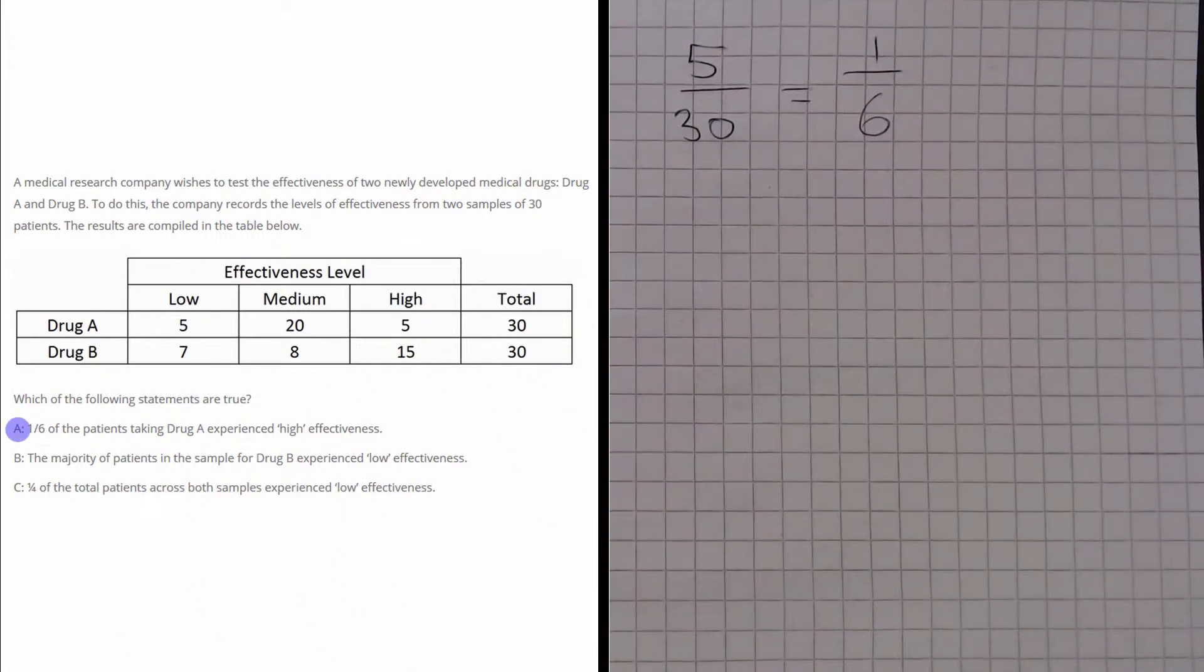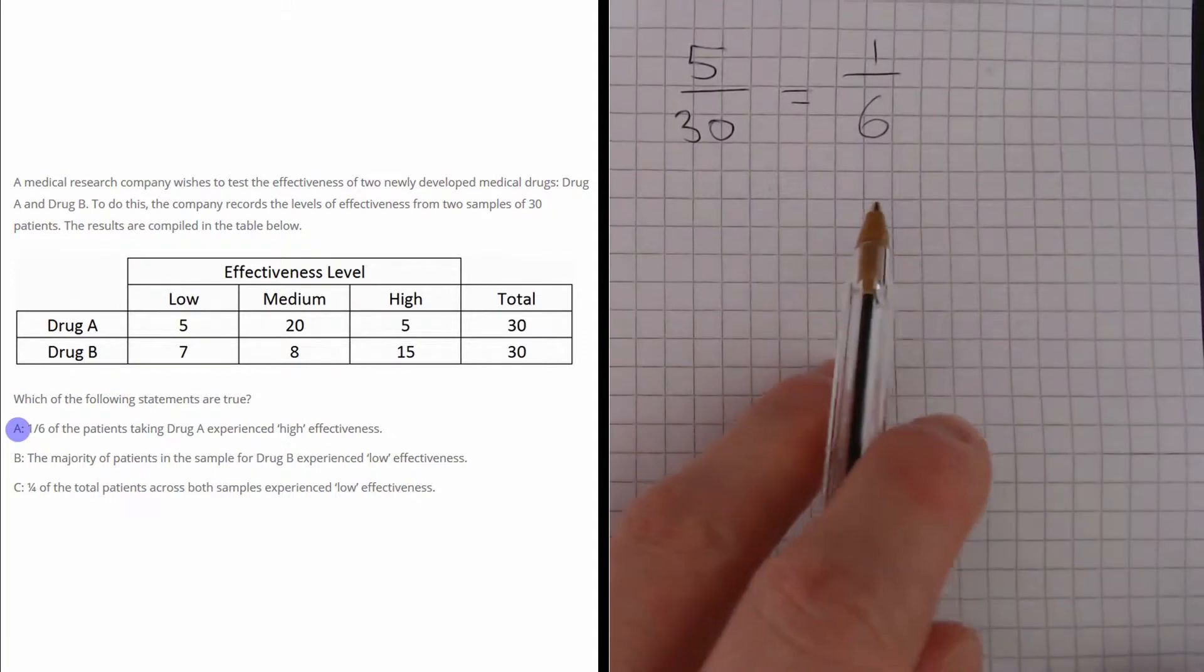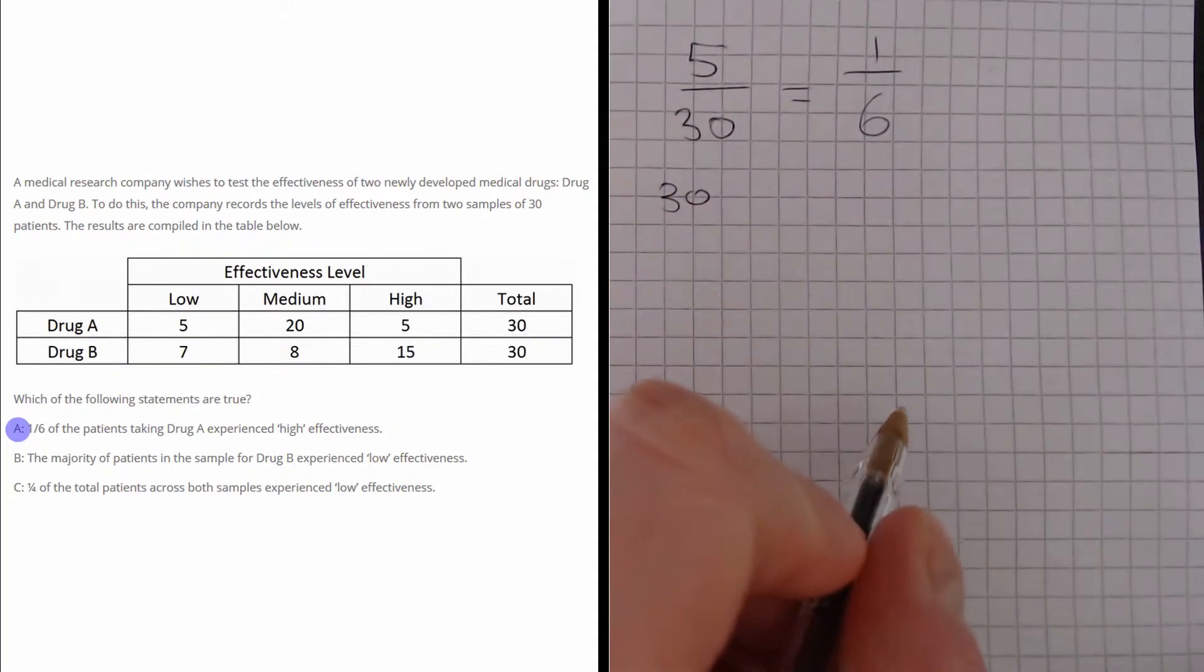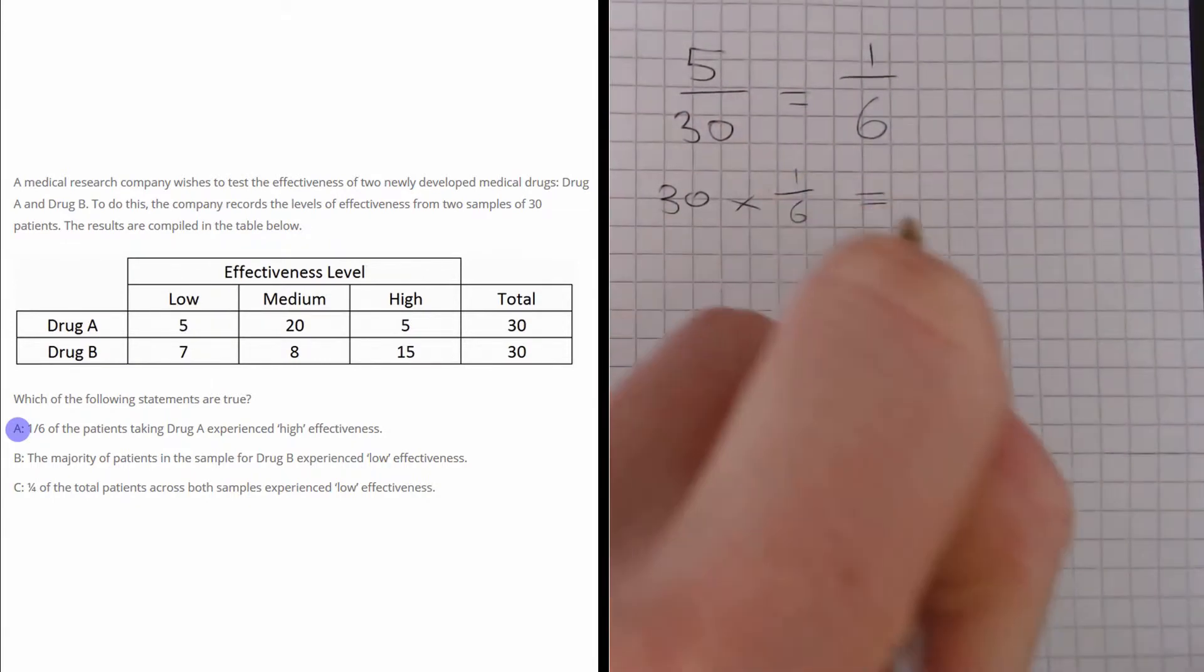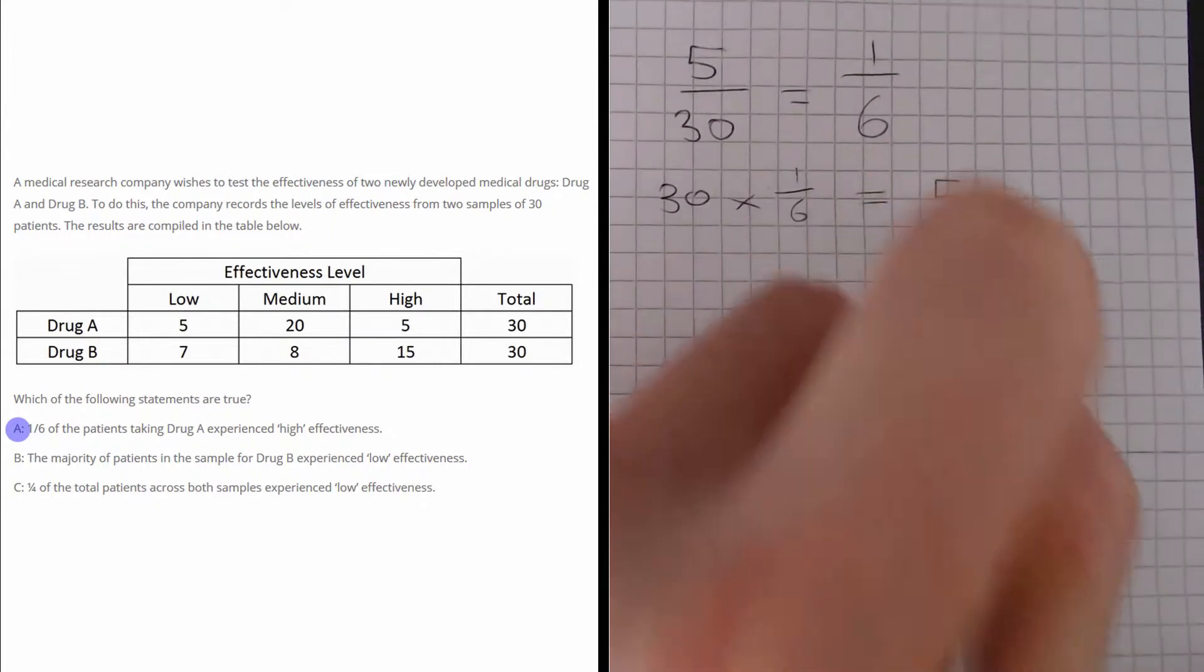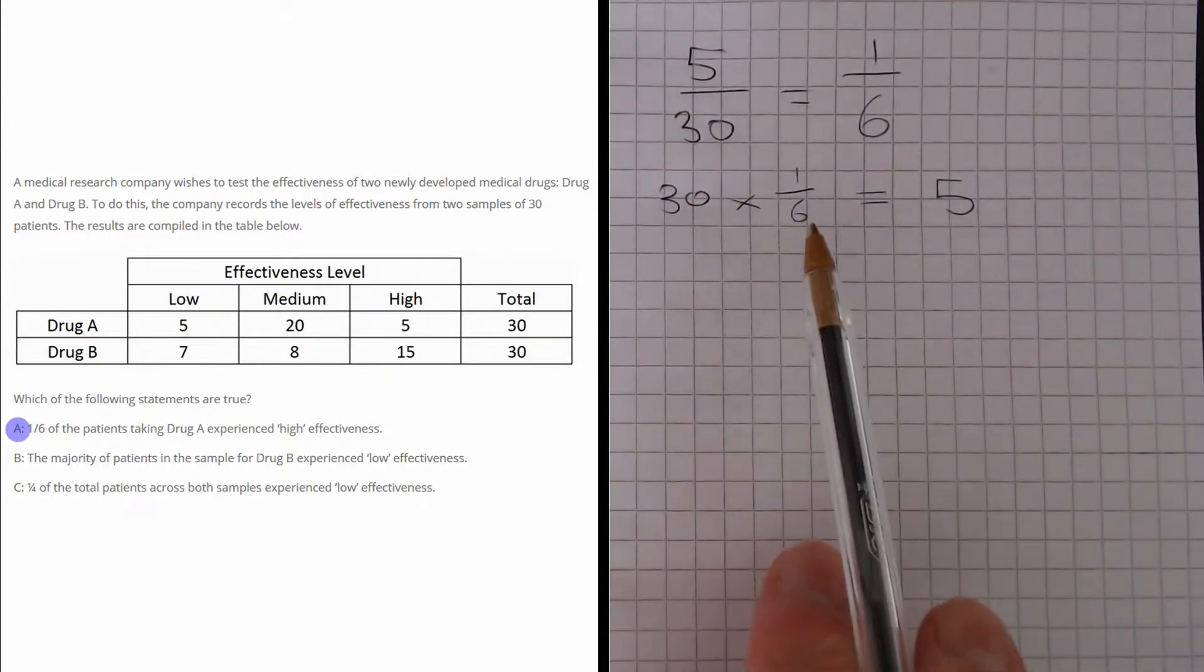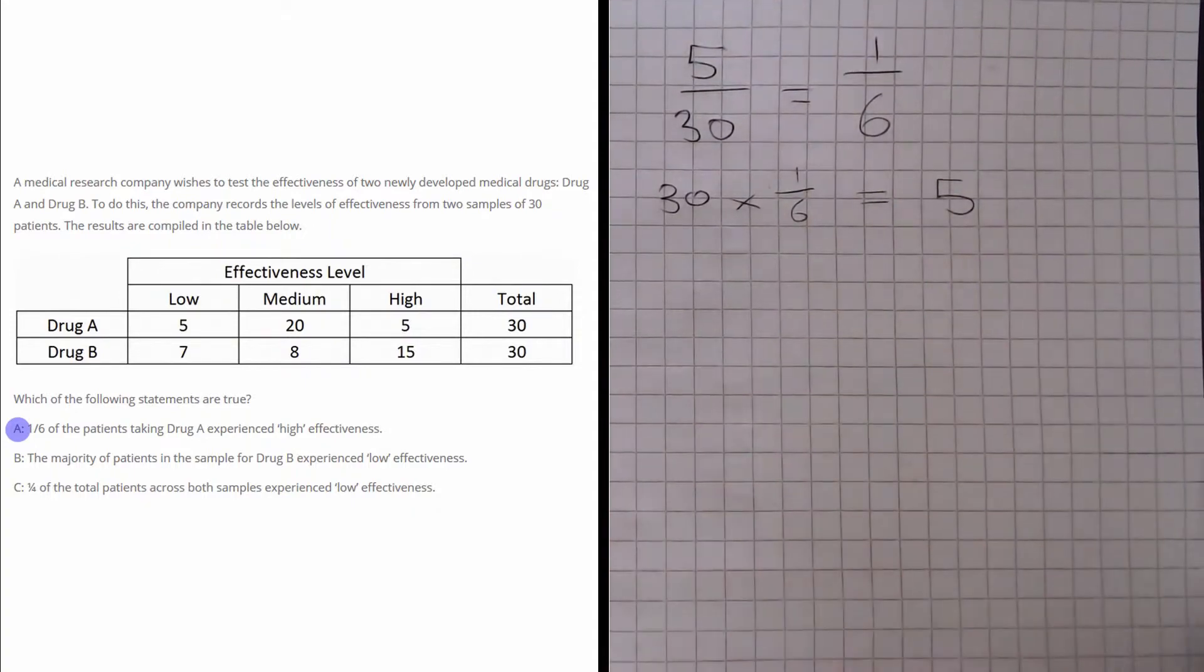So the answer to that question is true. Now, the other way of doing this is saying there are 30 people in the sample, so a sixth of the sample would be 30 divided by 6, which is five. So if a sixth of the sample experienced high effectiveness, then that equates to five people, and we can read off from the table that there are five people.